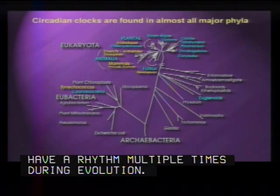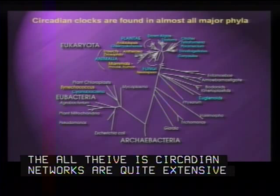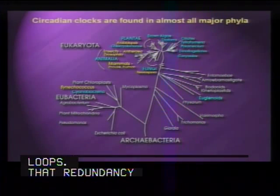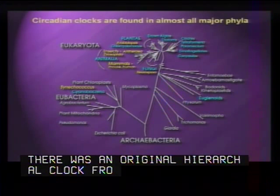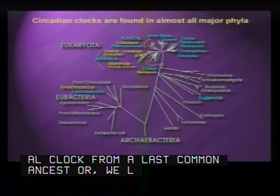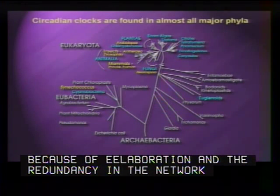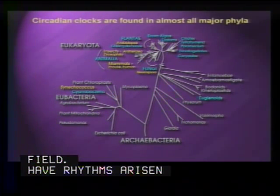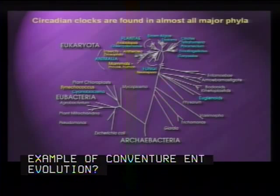The alternative hypothesis is that because circadian networks involve multiple feedback loops, the potential redundancy built into the architecture of circadian systems means that if there are common components — if there was an original hierarchical clock from a last common ancestor — we've lost the footprint of those common components because of elaboration and redundancy in the networks. So the field still needs to address whether rhythms arose multiple times throughout evolution as convergent evolution, or whether we've simply lost the footprint of common ancestral clock genes.